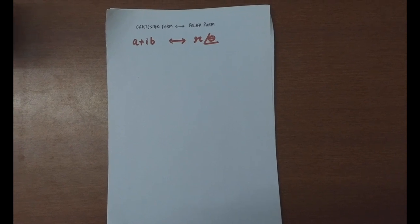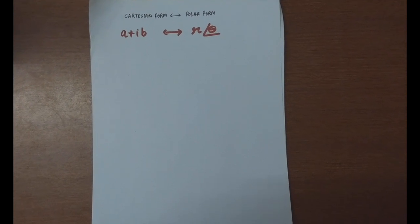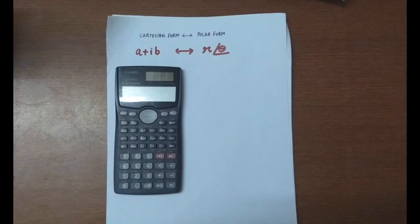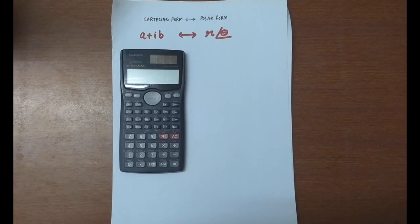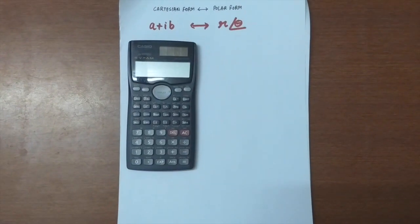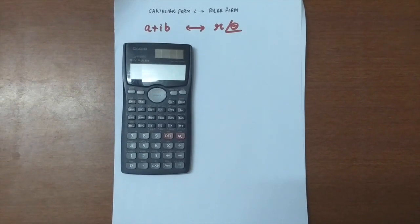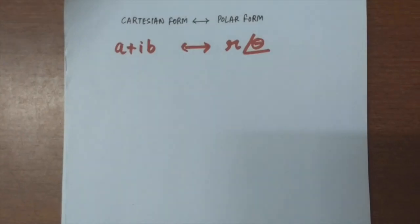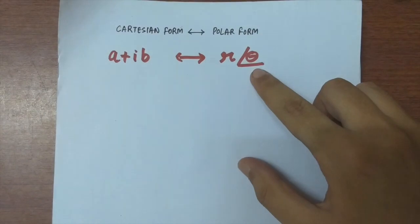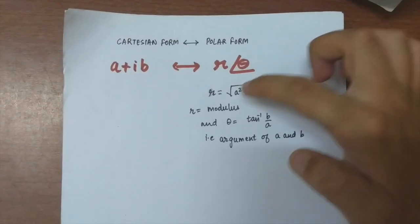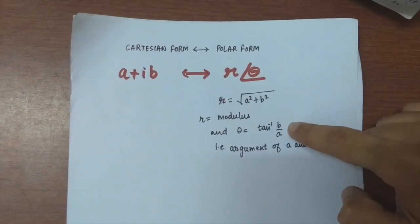Welcome to another video from Backbencher Studios. In this video we are going to talk about the method to convert Cartesian form to polar form and vice versa using a scientific calculator. We are using an FX 991 MS calculator, which is a two-way powered calculator. The Cartesian form is a+ib, the polar form is r∠θ, where r is the modulus (√(a²+b²)) and θ is the argument (tan⁻¹(b/a)).